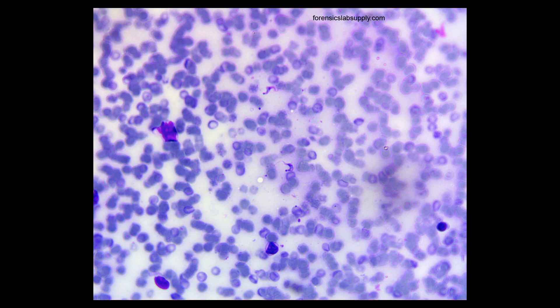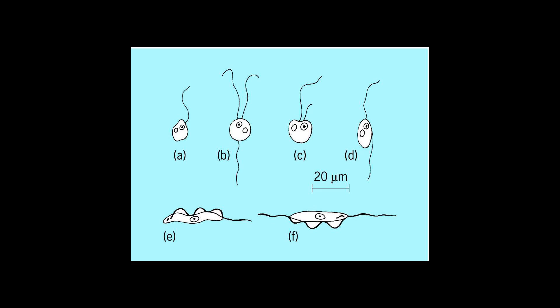The kinetoplast is found at the base of a cell's flagella and is associated to the flagellum basal body by a cytoskeletal structure.